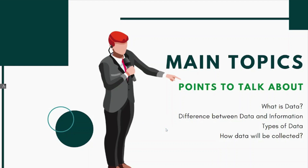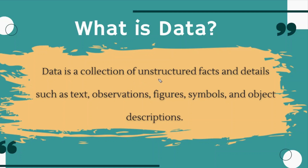Let's understand what exactly data is. Data is a collection of unstructured facts and details such as text, observations, figures, symbols, and object descriptions. It is a collection of unstructured means it has no structure, and it will give some information about a person or an object. Data is a set of values that can be qualitative or quantitative — we will talk about qualitative and quantitative when we discuss the types of data.